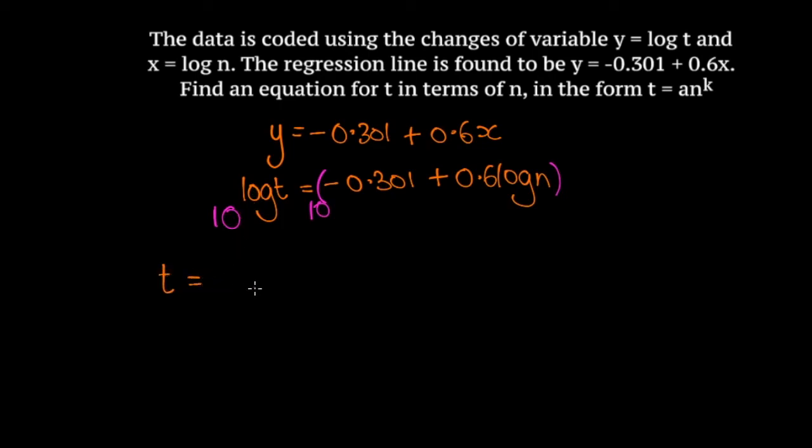On the right, we're going to use exponent laws here. So 10 to the a plus b is equal to 10 to the a times 10 to the b. If we apply that rule here, we get t equals 10 to the minus 0.301 times 10 to the positive 0.6 log n.